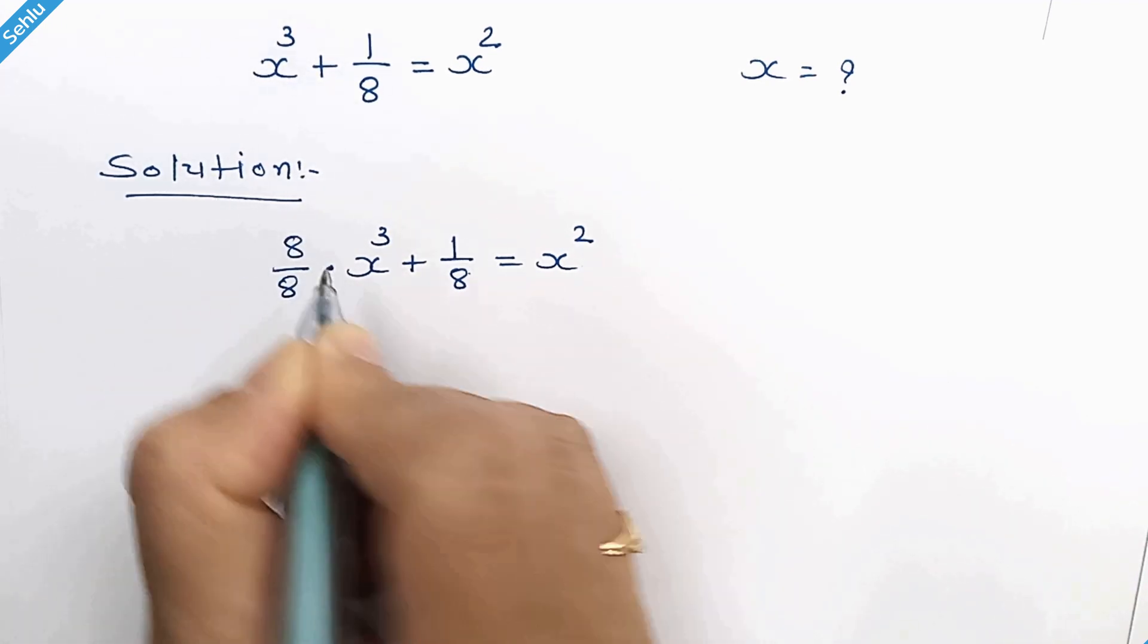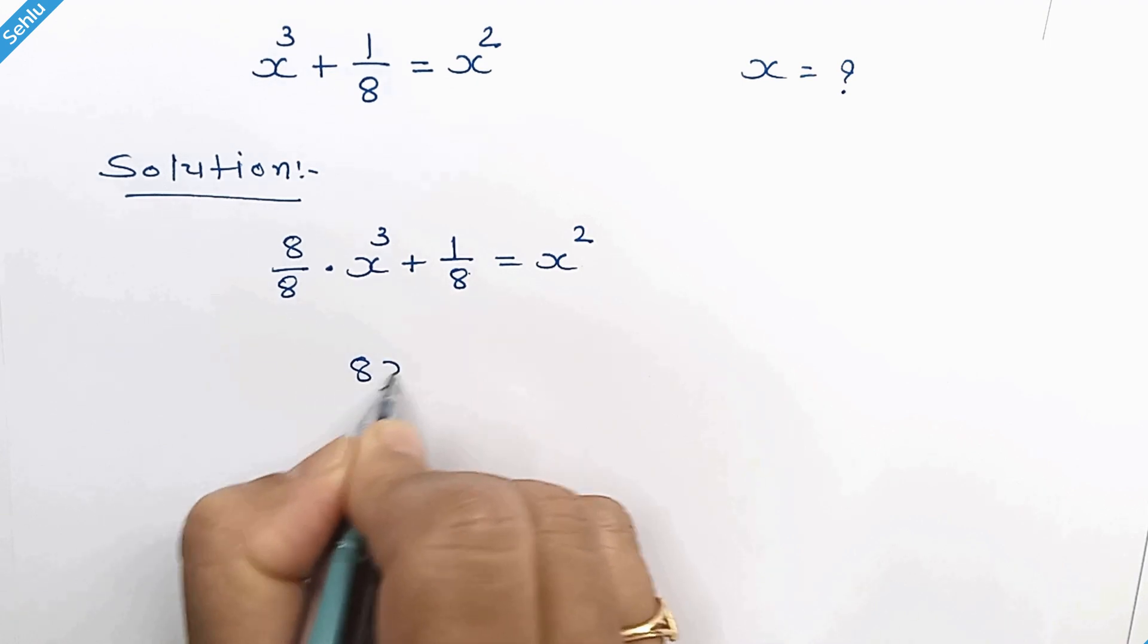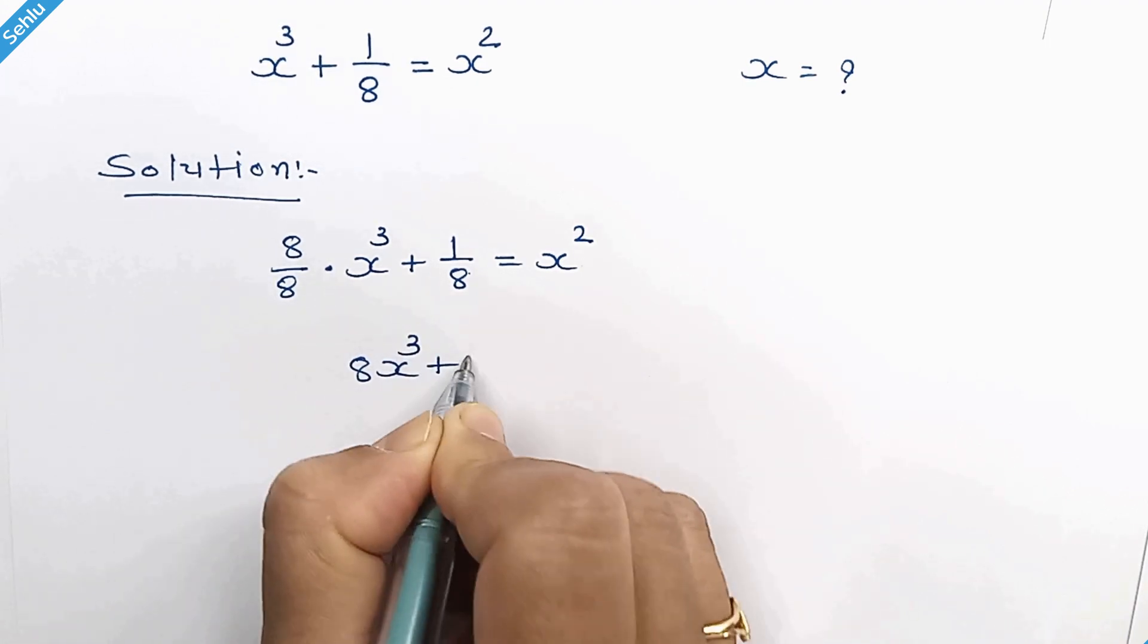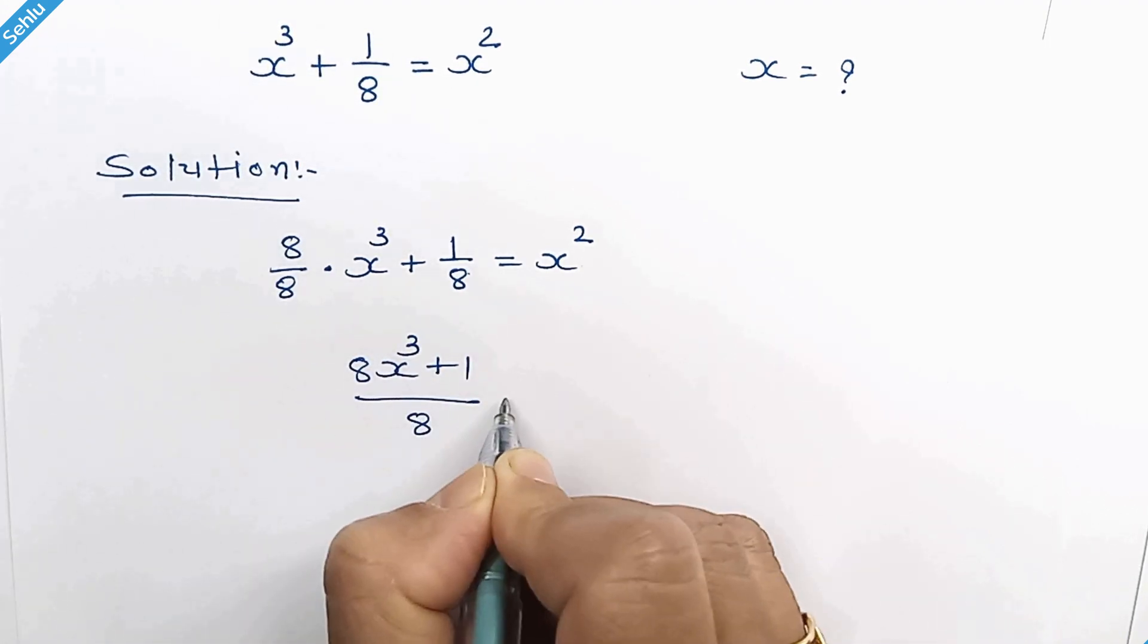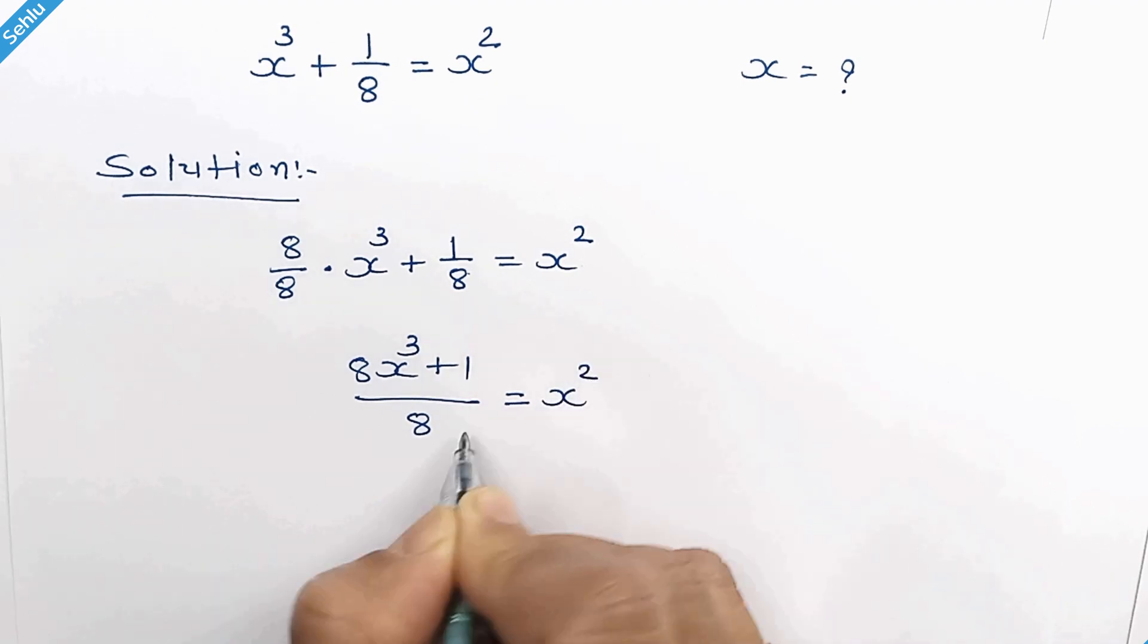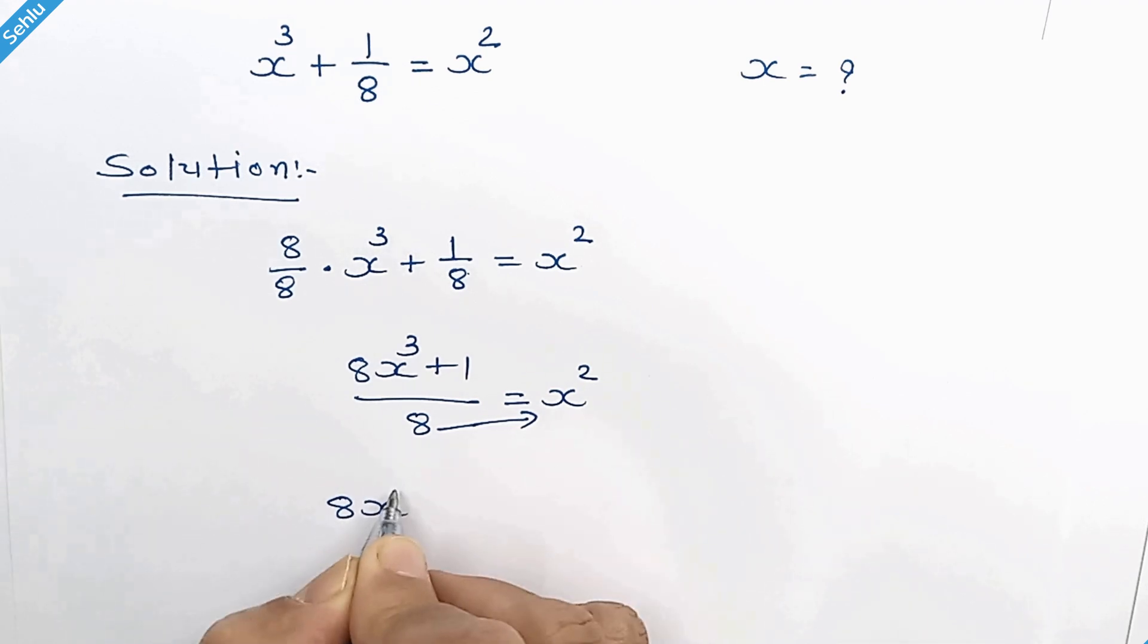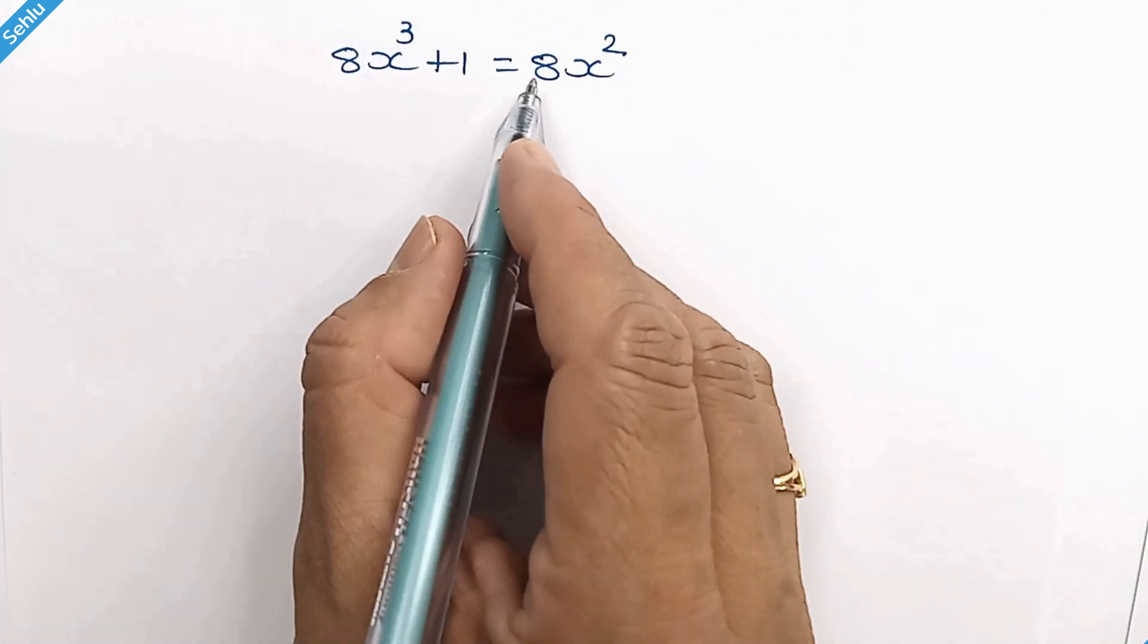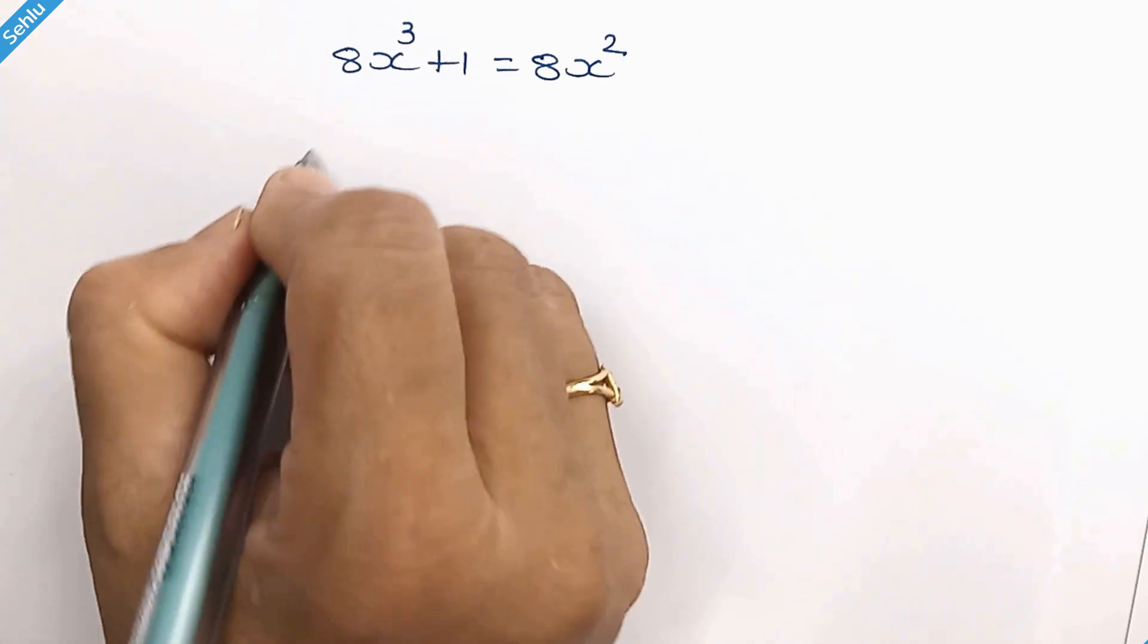So it will be 8x cube plus 1 over 8. Move this 8 to the right hand side. Let's get everything to the left hand side.